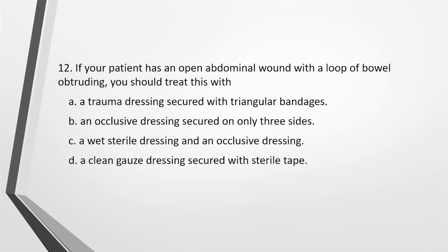Question 12: If your patient has an open abdominal wound with a loop of bowel protruding, you should treat this with: A. A trauma dressing secured with triangular bandages. B. An occlusive dressing secured on only three sides. C. A wet sterile dressing and an occlusive dressing. D. A clean gauze dressing secured with sterile tape.